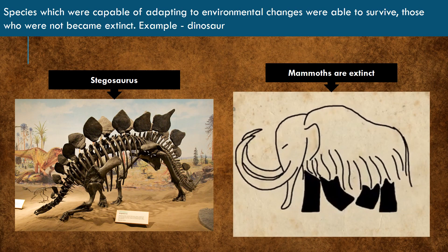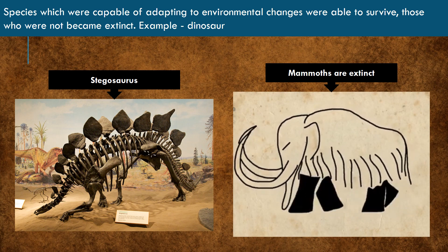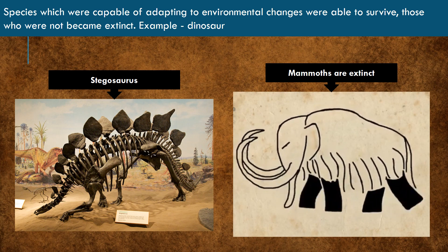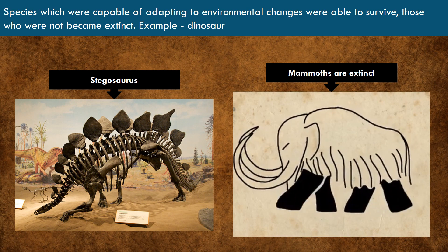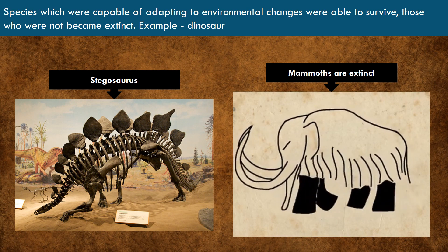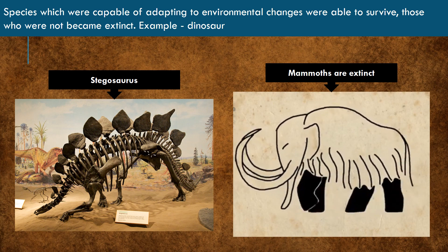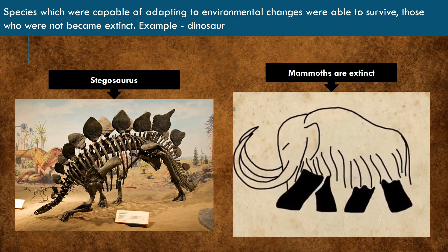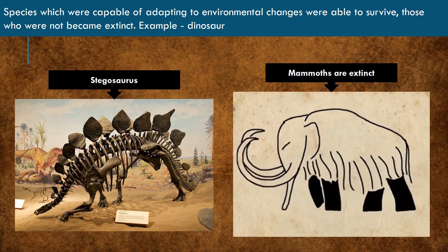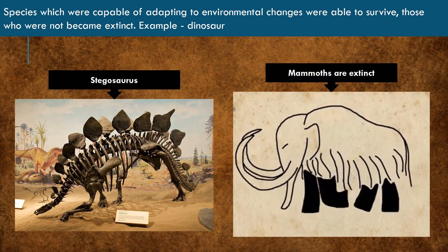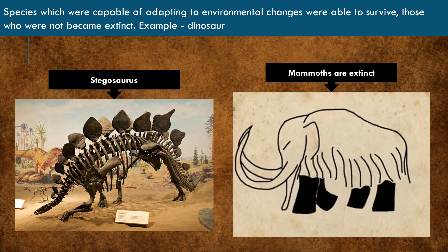He stated that species which were capable of adjusting to environmental changes, such as earthquakes, floods, snowfall, etc., survived. Others died and became extinct. For example, mammoths and dinosaurs became extinct.